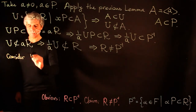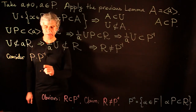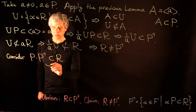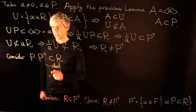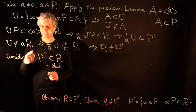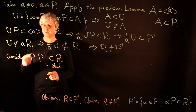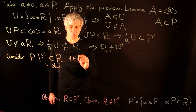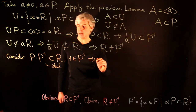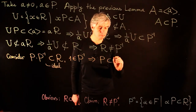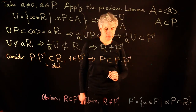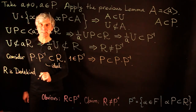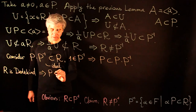Consider the product P·P⁻¹. By definition of P⁻¹ this is inside R, and it is an ideal in R, because P is an ideal so any factor multiplying from R gets absorbed into P. Moreover, since 1 ∈ P⁻¹, we have P ⊆ P·P⁻¹. But R is Dedekind and every prime ideal is maximal, so P is a maximal ideal. The ideal P·P⁻¹ contains the maximal ideal P, so either P·P⁻¹ = P or P·P⁻¹ = R.